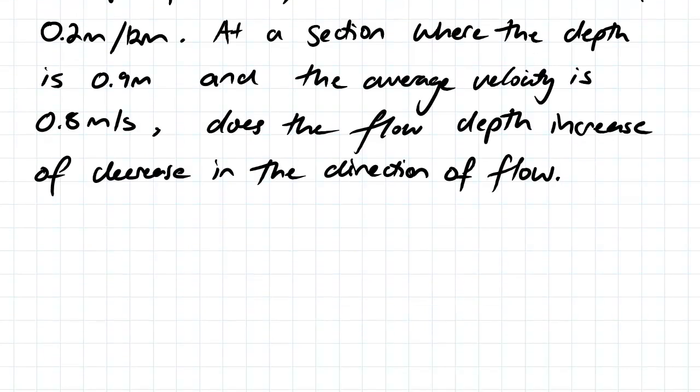What we need to use for this question is our equation for the variance in flow depth with respect to distance: dy/dx equals the gradient of head loss minus slope gradient, divided by one minus the Froude number squared.